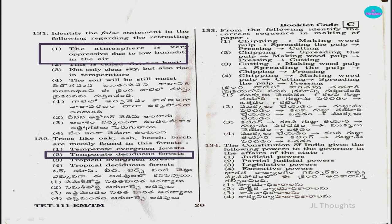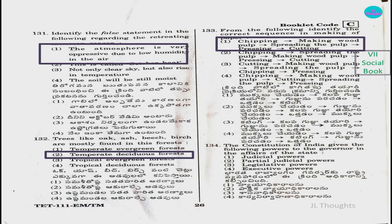Question number 133: Identify the correct sequence in making of paper. This is given in the class 7 social book. The correct sequence is: first chipping, then making wood pulp, then spreading the pulp, then pressing it, and then cutting it.